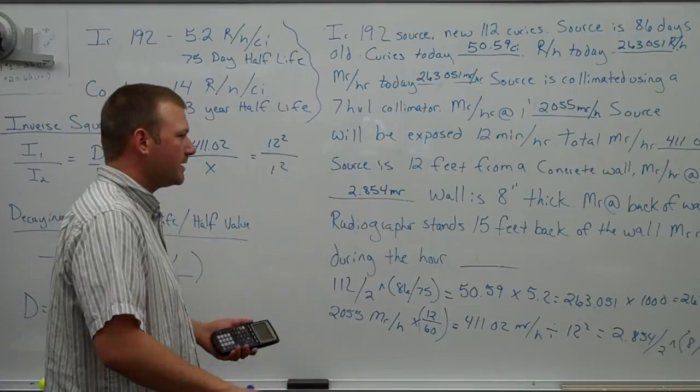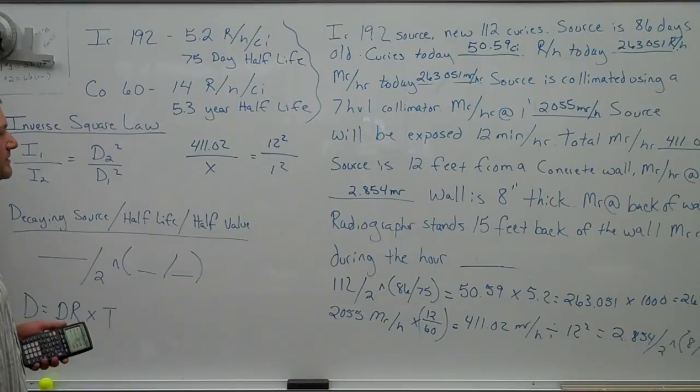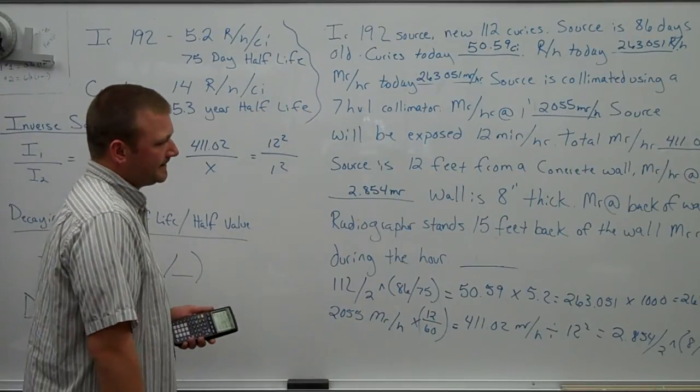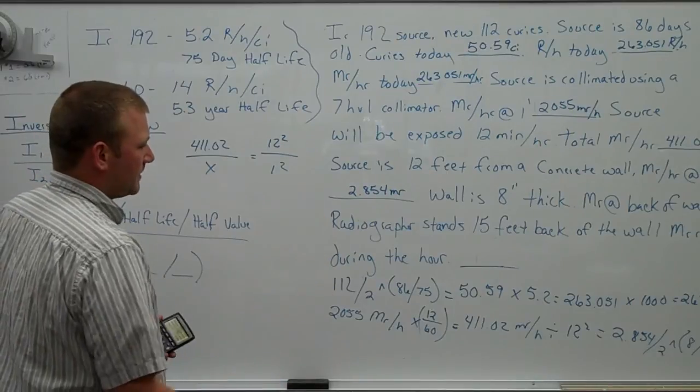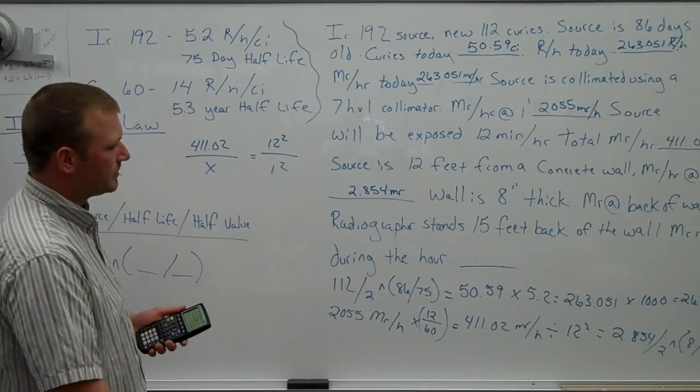So if you have 100 Rankin per hour, you attenuate through 1.75 inches of concrete, now you come out on the backside with 50 mR. So 2.854 divided by 2 to the power of 8 divided by 1.75. That's just how many half values we have.